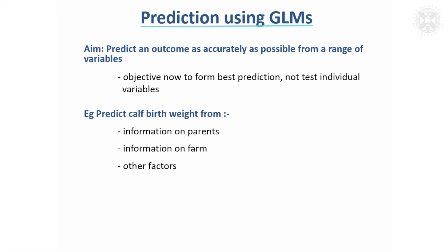So if we were predicting calf birth weight, whereas in a multiple regression model we'd have to just put continuous measurements in, now we can use categorical measurements — binary variables, information about the farm, what type of farm it was. So you can bring groupings into the prediction model as well, making it even more useful than multiple regression.